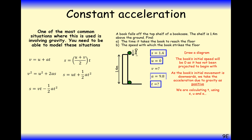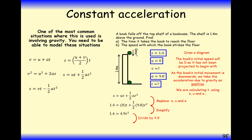To find the time, we use S equals half AT squared. T squared equals 1.4 over 4.9. We only take the positive root because a negative time would imply travelling backwards in time over 1.4 metres, which doesn't make sense. So the time is 0.53 seconds.